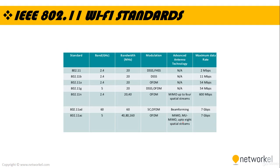The 802.11 Wi-Fi standards are a set of media access control and physical layer specifications for implementing wireless local area network communication. The chart shows the evolution of the standards: the original 802.11 standard had a maximum data rate of 2 megabits per second, while the latest 802.11ac standard achieves up to 7 gigabits per second. The chart also shows frequency bands, bandwidths, modulation types, and advanced antenna technologies for each standard.